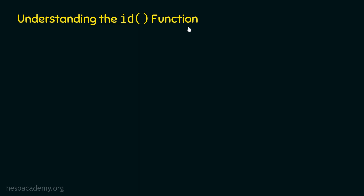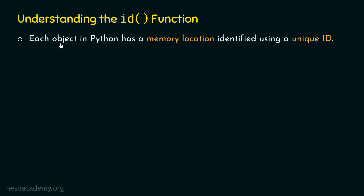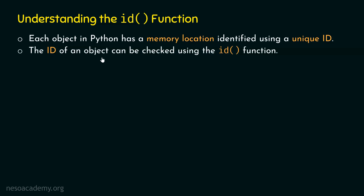In a nutshell, each object in Python has a memory location, identified using a unique id. Every object has a unique id and we can refer to the object through its unique id. Also, the id of an object can be checked using the id function, which provides us the capability to check the id of a specific object.